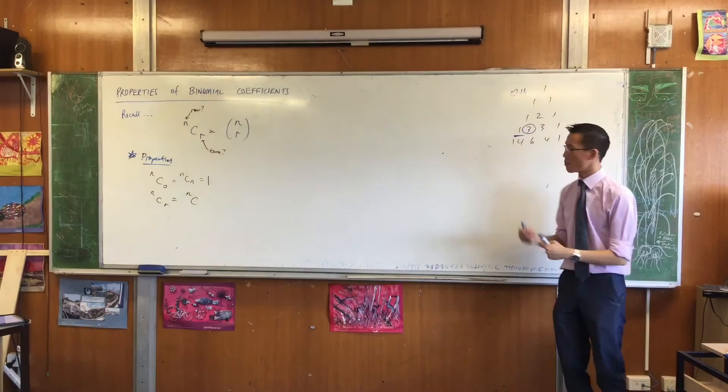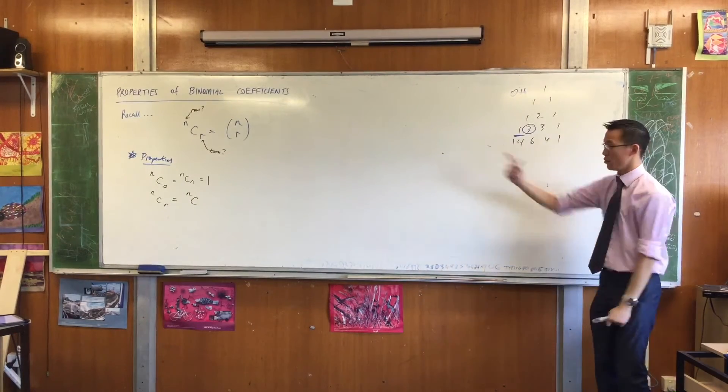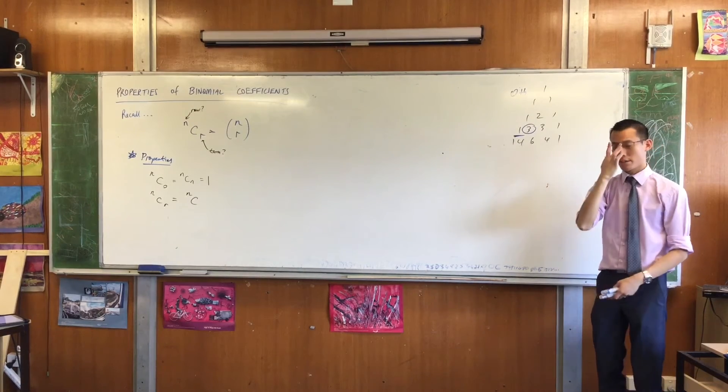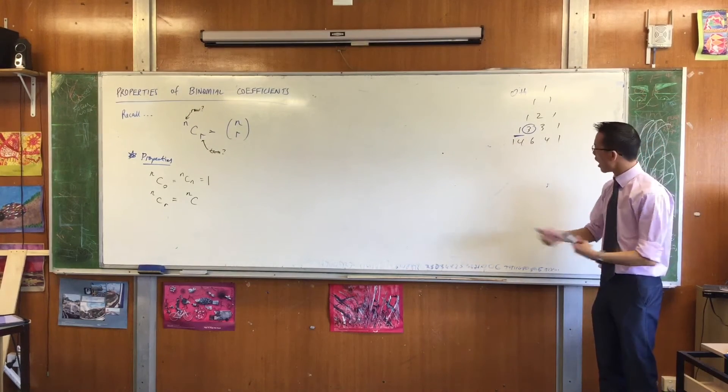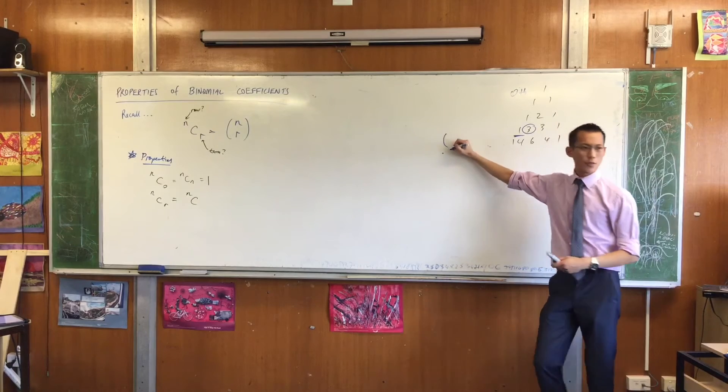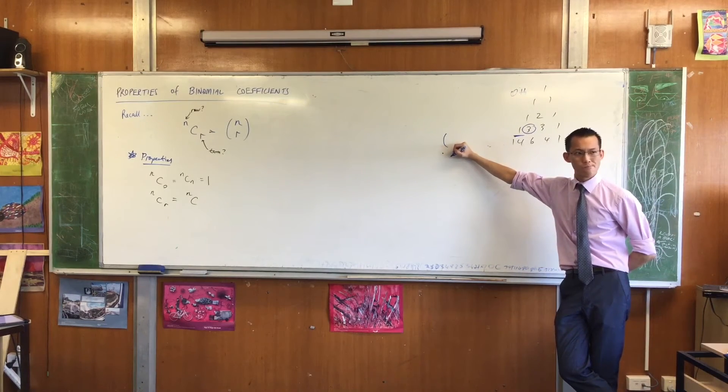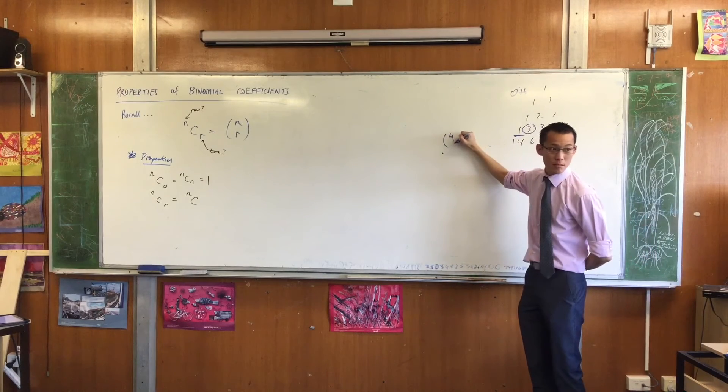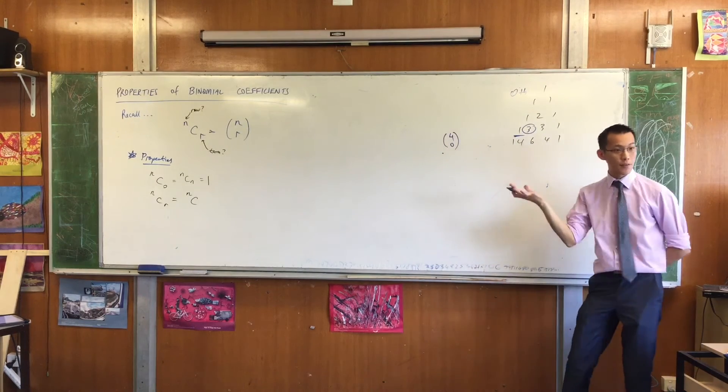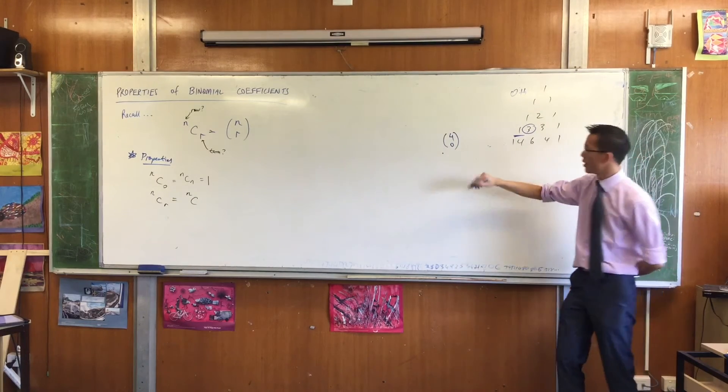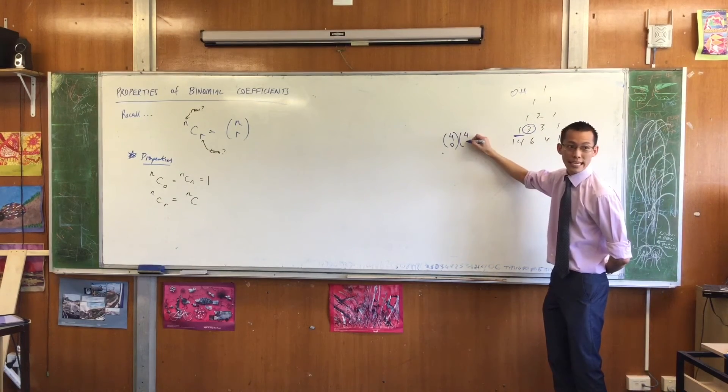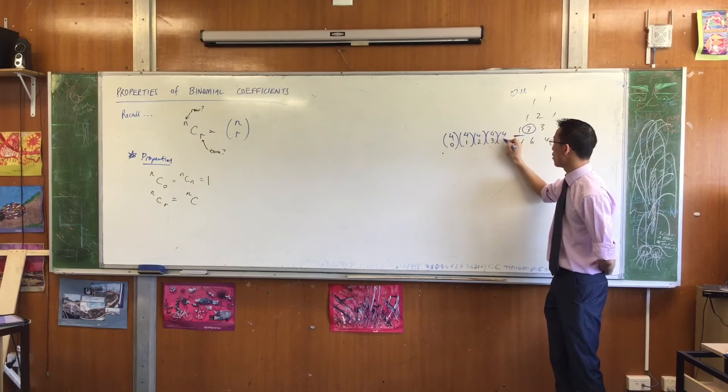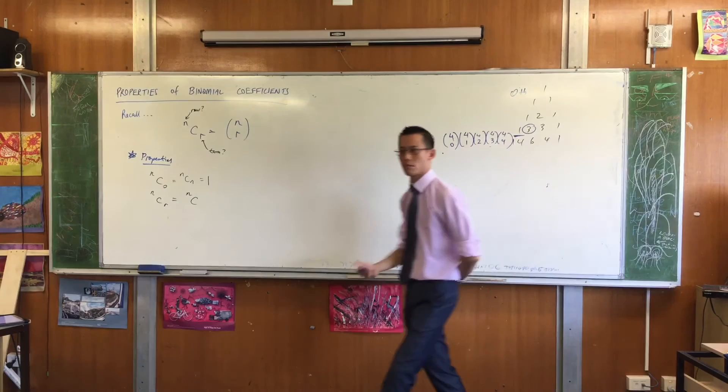I can actually rewrite Pascal's triangle, the whole thing, using this NCR notation. So for instance, if I were to replace this row here, instead of writing 1, 4, 6, 4, 1, I could write, what's the first term in NCR notation? What row am I on? Fourth row. And which term is it? It's the zeroth term, right? There's the first one, which of course is 1. The next term will be 4C1, and then 4C2, and then I've got the whole row once I get to nCn, which in this case is 4C4.